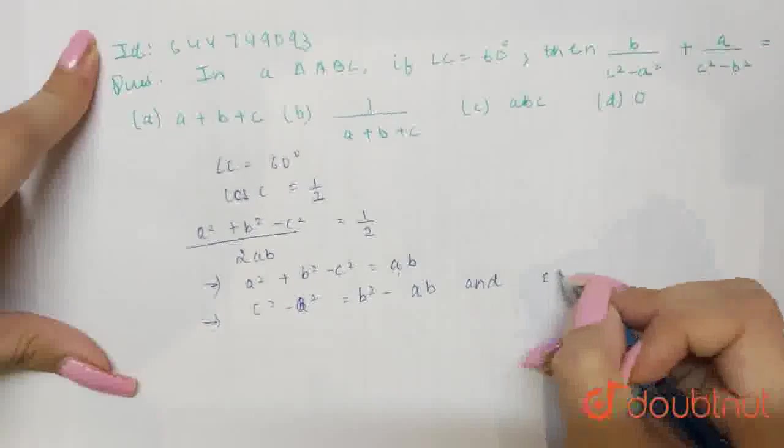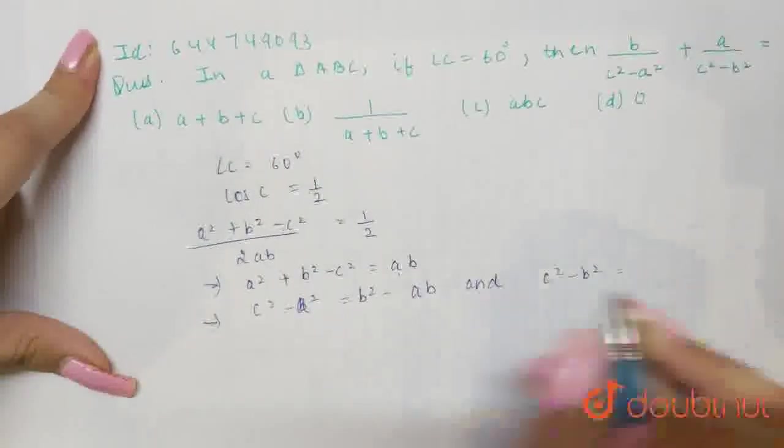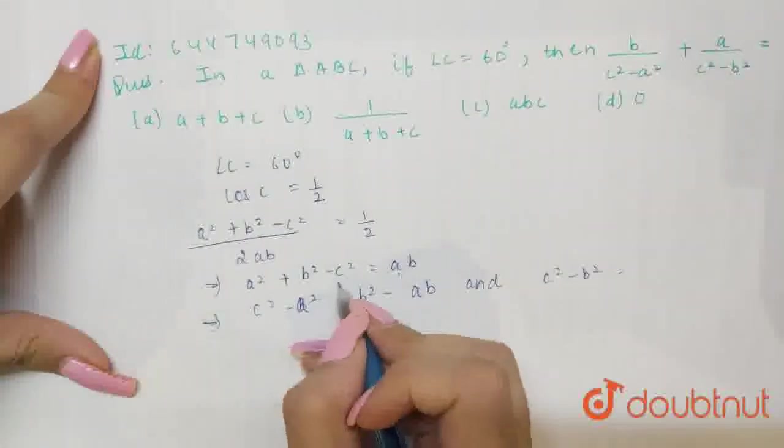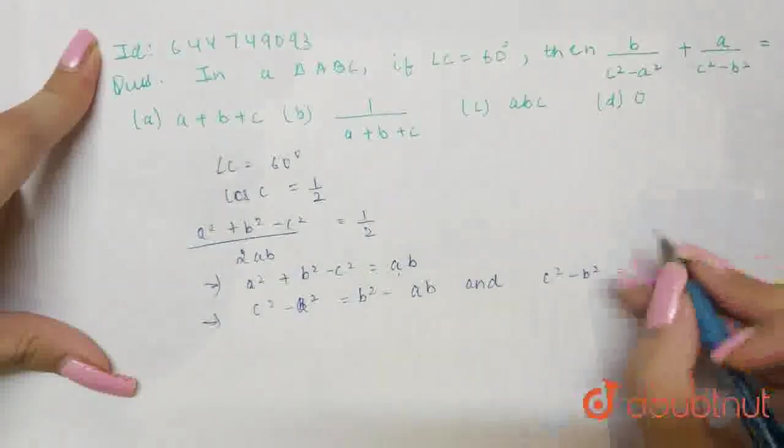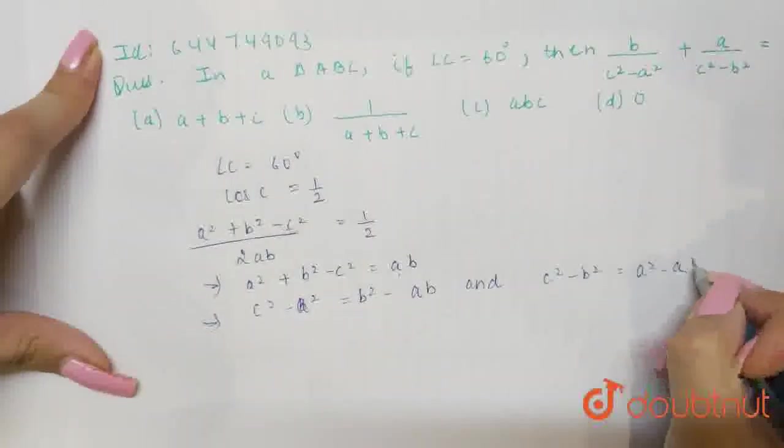And if I find the value of c square minus b square, that is this, this will be equal to a square minus ab and sign will change, right?